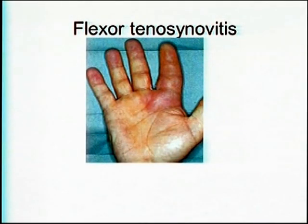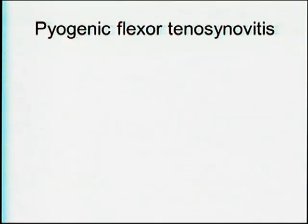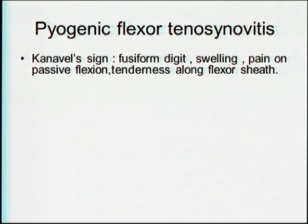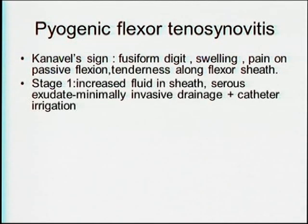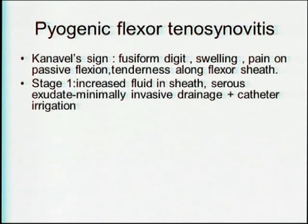Next is flexor tenosynovitis. This is the classical picture, showing the cardinal sign, the fusiform digit, swelling, pain on passive flexion, and tenderness along the flexor sheath. In stage one, there is increased fluid in the sheath with serous exudate — you do a minimally invasive drainage and catheter irrigation, which will generally control the infection, alongside antibiotics.